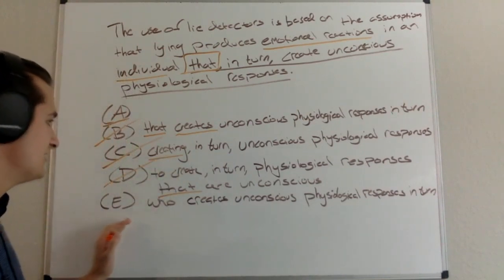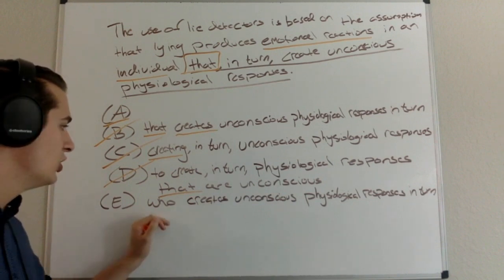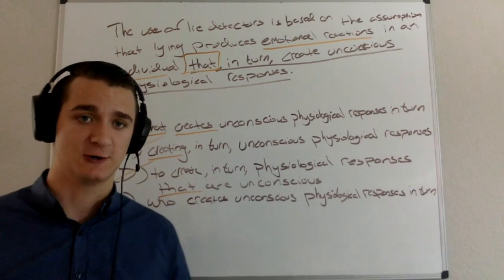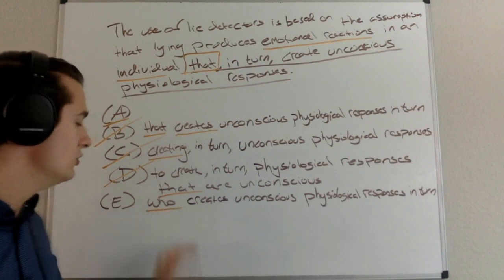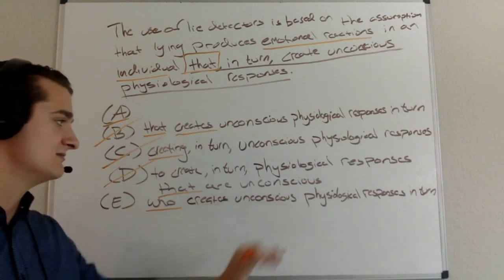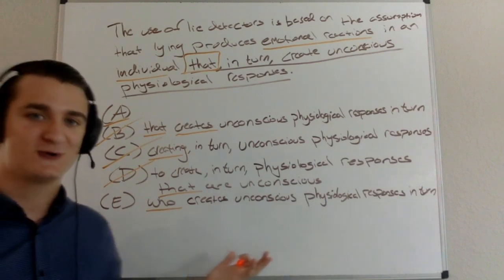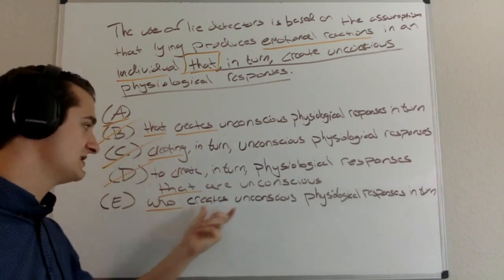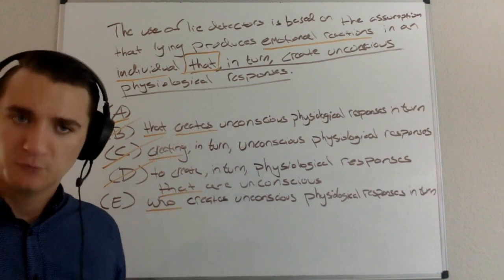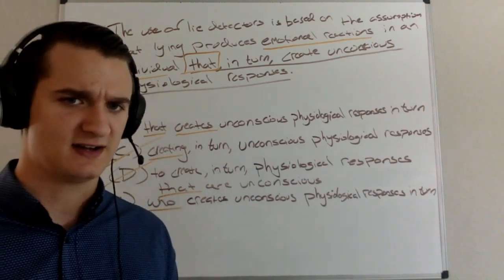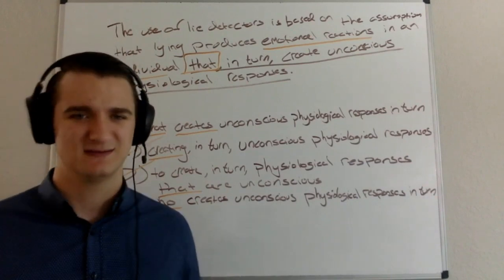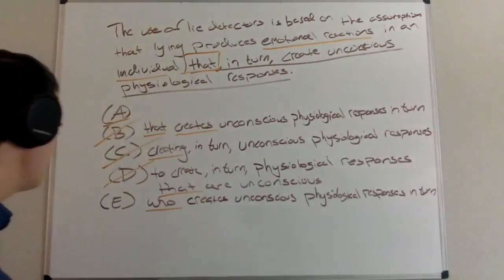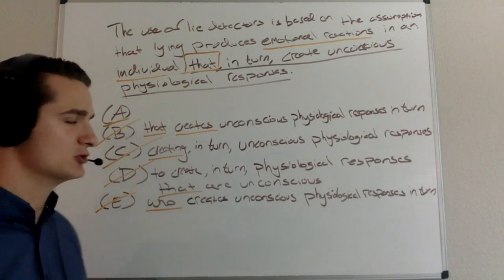Finally, looking at E: 'who creates unconscious physiological responses in turn' — my modifier here is 'who.' Who creates unconscious physiological responses? In this instance, 'who' would be the individual. 'An individual who creates unconscious physiological responses' — wait, that doesn't make sense. Why would an individual create unconscious physiological responses? If they're unconscious, the individual can't create those. So I can eliminate E for that reason. I'm left with A as the best version of that sentence. Focusing on that modifier and making sure it logically modifies what it's supposed to modify is super important.